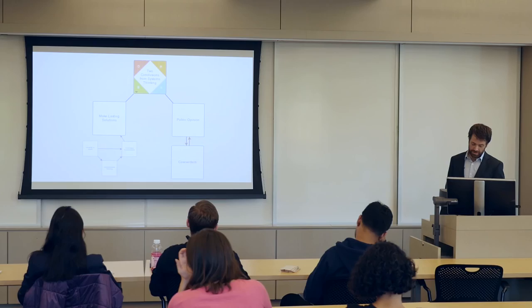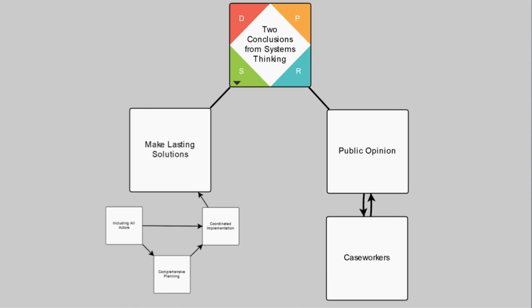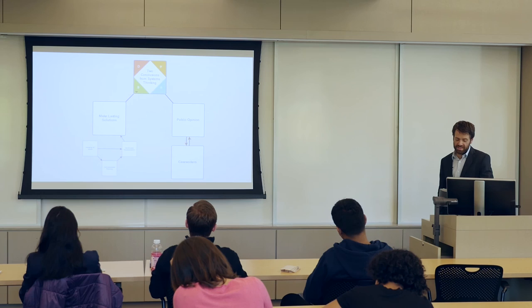Just to conclude, the two main ideas from my exploration of systems thinking are to make lasting solutions, include all actors in comprehensive planning and coordinated implementation, and public opinion matters a lot. Overall, systems thinking helps to understand the complexity of a situation and seek out lasting solutions. Over the past decades, caseworkers have been leaving the job and despite millions of dollars and countless studies, the problem has not decreased. A more cohesive systemic approach might be a solution. Thanks.